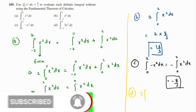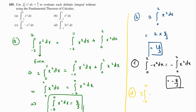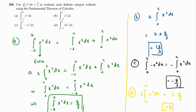For part d, the constant three comes out from the integral, giving us three times the integration from negative two to zero of x squared dx. We just found that equals eight over three, so three times eight over three is simply eight.